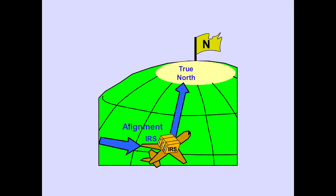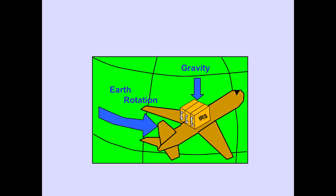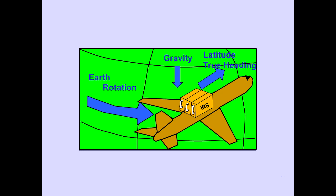The IRS must be aligned before it can be used. Alignment refers to the process the IRS goes through to determine the airplane's relationship to true north. During alignment, the IRS senses earth rotation and gravity. The IRS uses earth rotation and gravity information to calculate latitude and true heading.